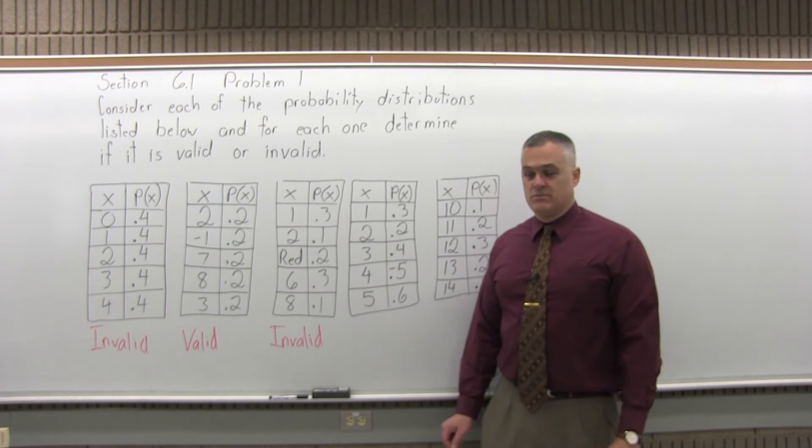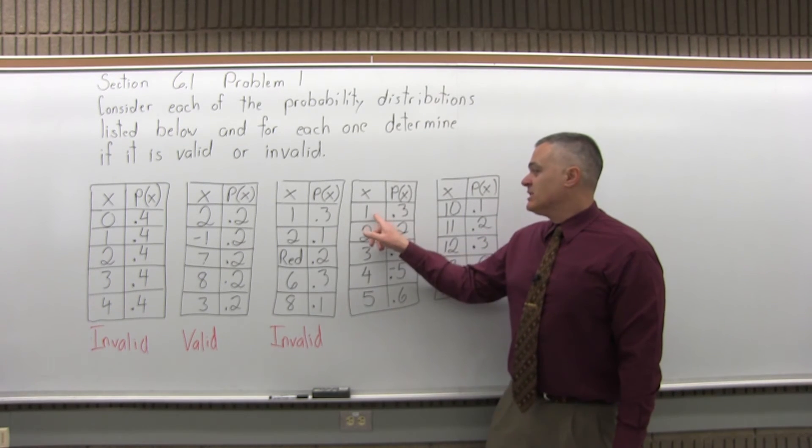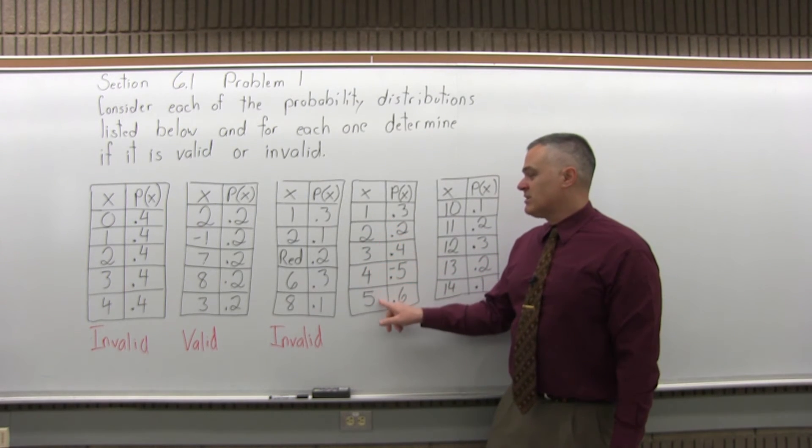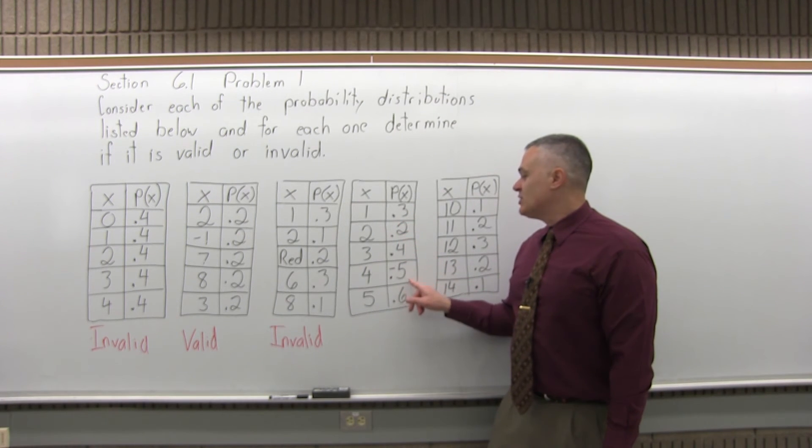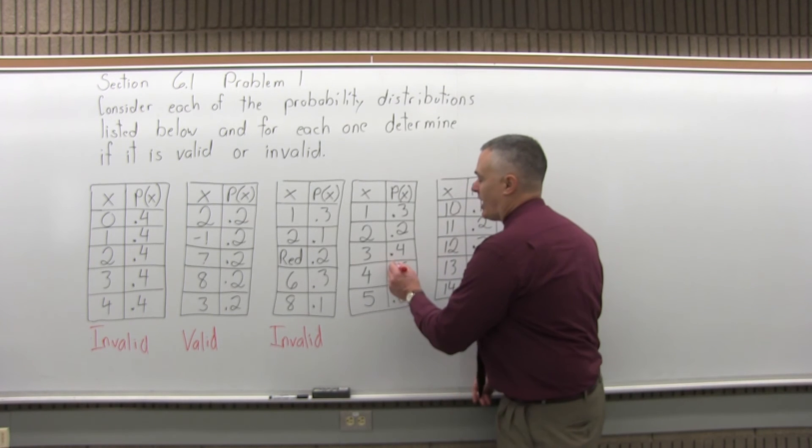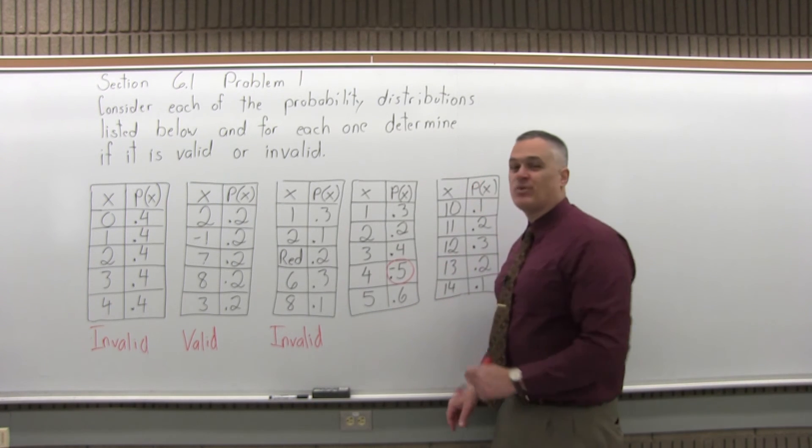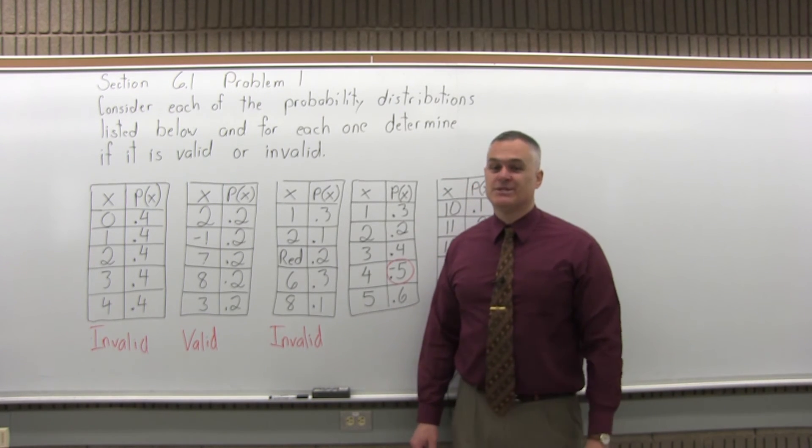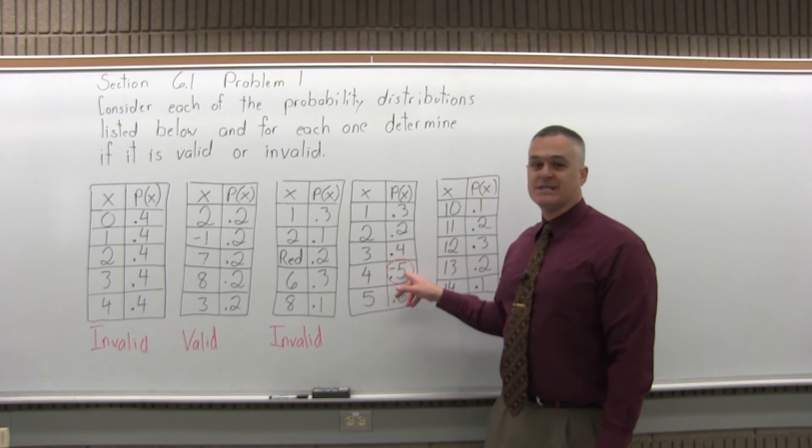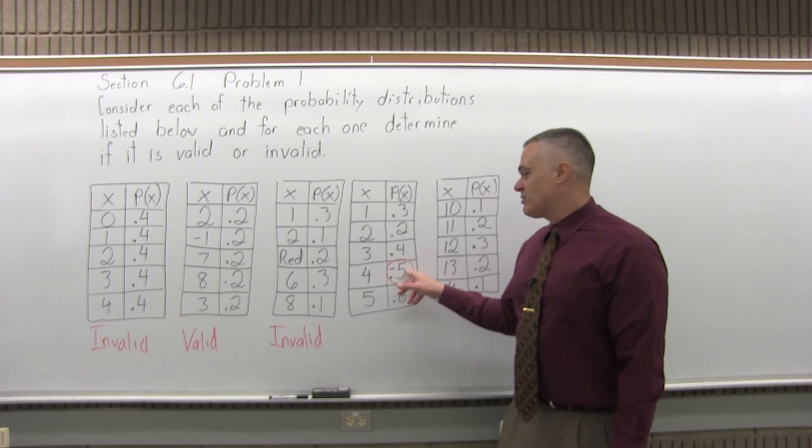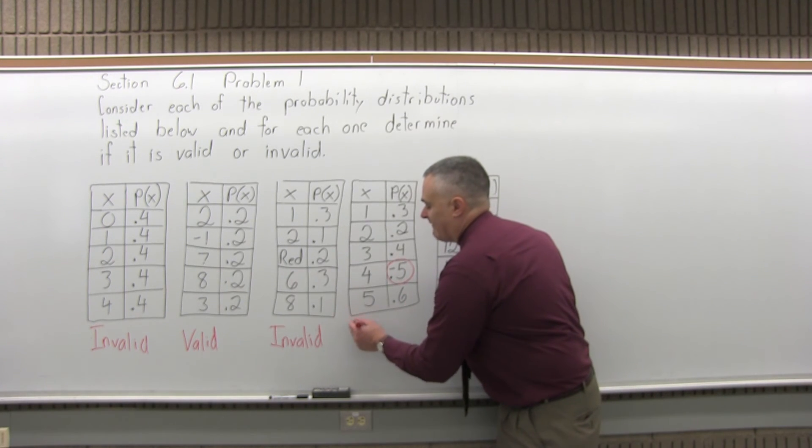The fourth one, everything in the first column is a number. Everything in the second column is not between 0 and 1. Negative 0.5 is not between 0 and 1. So even if it does add up to 1.0, the fact that one of the values is negative in the second column makes the fourth probability distribution invalid.